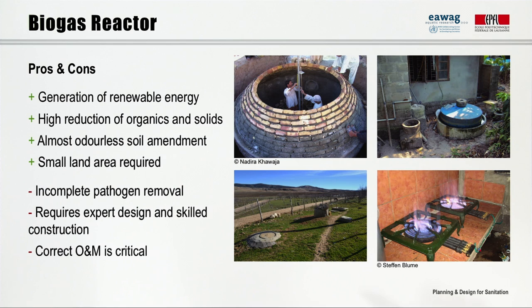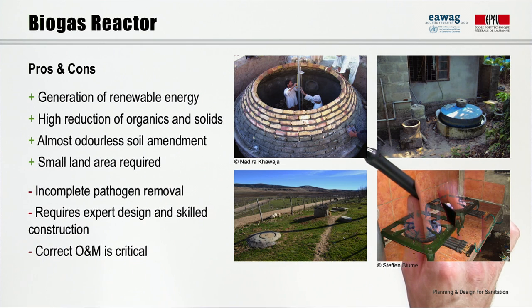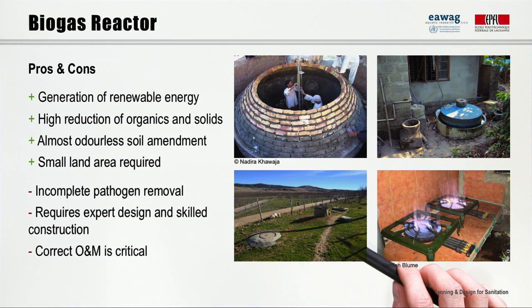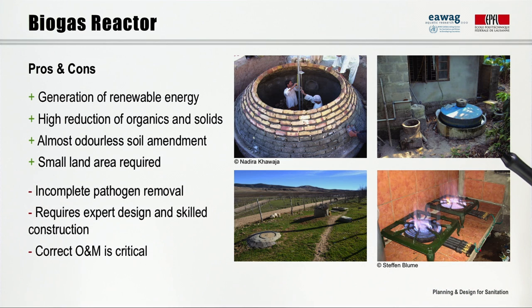On the photos, you can see some examples of different biogas reactor designs. The picture on the upper left shows a fixed dome reactor under construction. This is another fixed dome digester similar to the one shown on the drawing — as you can see, the space requirement is quite low because it can be built underground. On the right side, you can see a floating dome reactor where the gas storage can move up and down depending on the gas volume inside. And this one here is a biogas stove. This technology has the clear benefit that no energy is required for operation — energy is actually produced. A high reduction of organic matter and particles can be achieved.